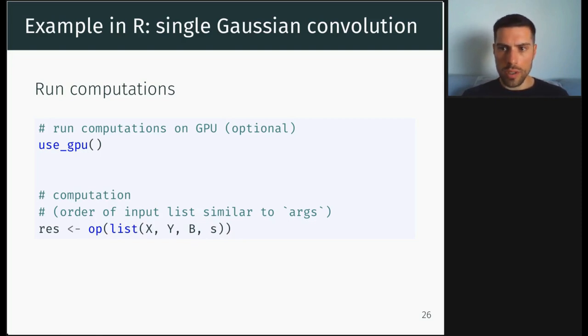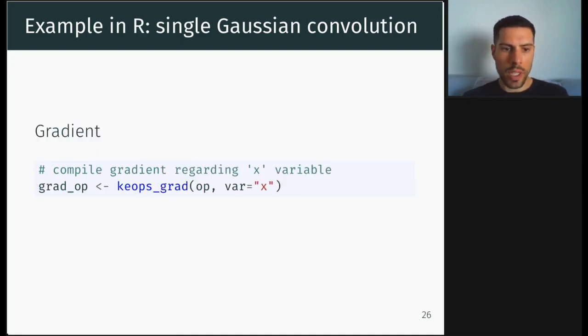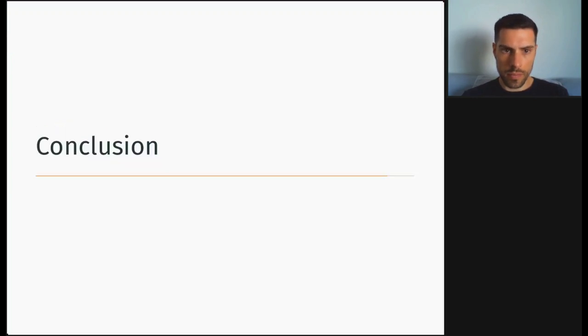The code is the same if you want to run your computation on CPU or GPU. The only difference, if you want to use GPU, is that you have to call this function that will say to the new operator that its computation will be run on the GPU. And then you can also take the gradient regarding the x variable, for instance, of your operator.